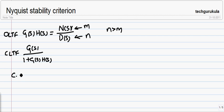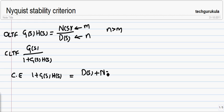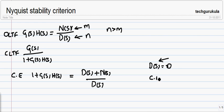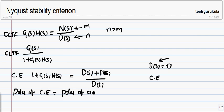We have the characteristic equation, which is 1 plus G(s)H(s). If we rewrite this in terms of N(s) and D(s), we can write it as D(s) plus N(s) over D(s). If we equate D(s) equals zero and find the roots, those roots will be the poles of the characteristic equation. The poles of G(s)H(s) are also the same because D(s) equals zero is the same equation. So the poles of the characteristic equation are equal to the poles of the open loop transfer function.